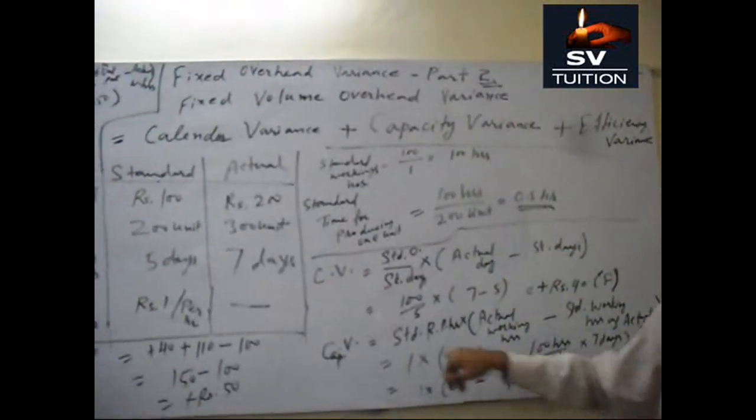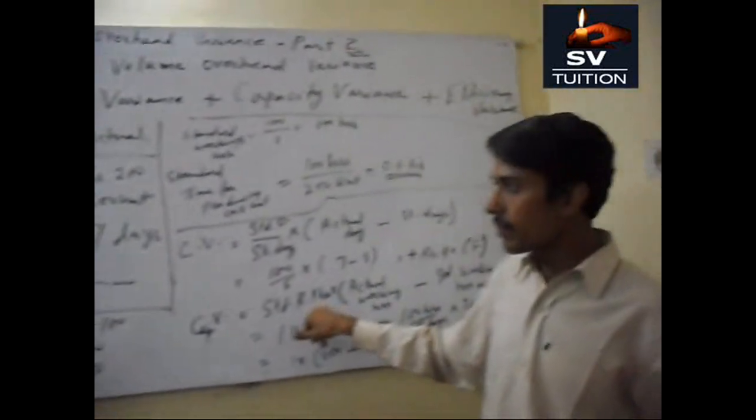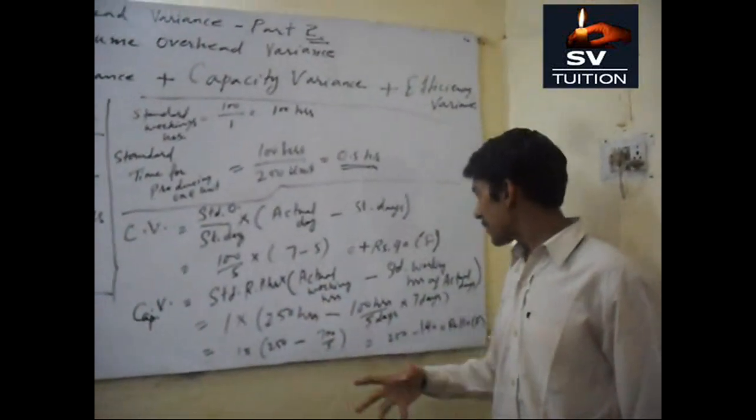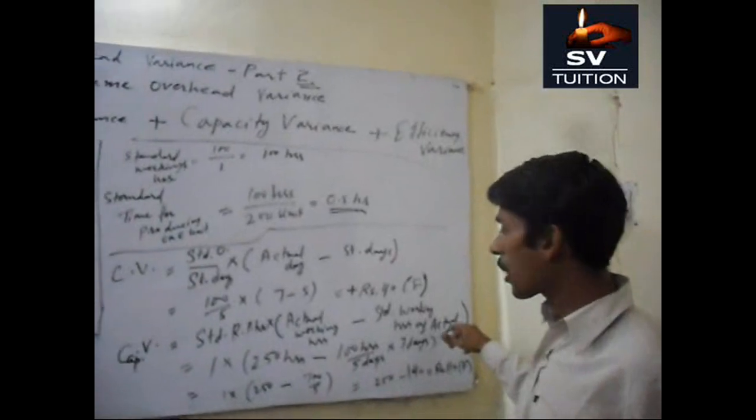Second we will calculate capacity variance. Capacity variance is standard rate per hour. This is 1 into actual working hours minus standard working hours of actual days.